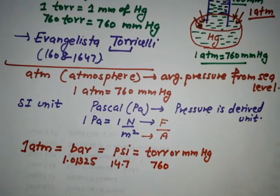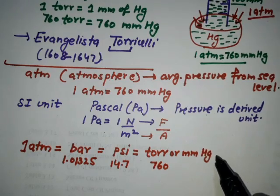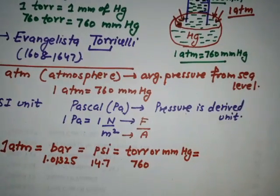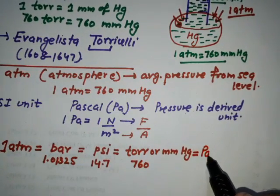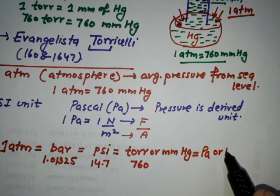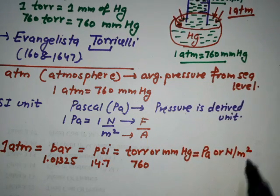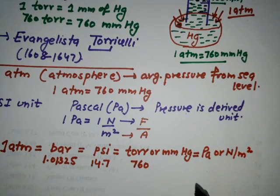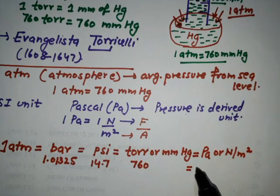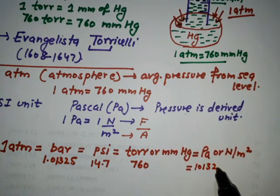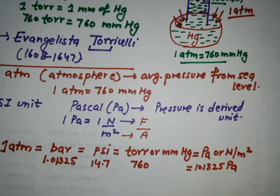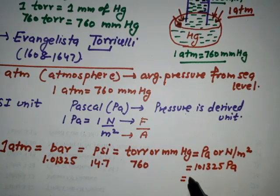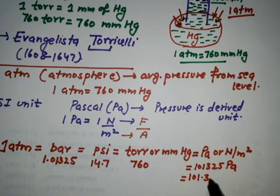One ATM is also equal to Pascal, or Newton per meter squared, written as 101,325 Pascal, or 101.325 kiloPascal.